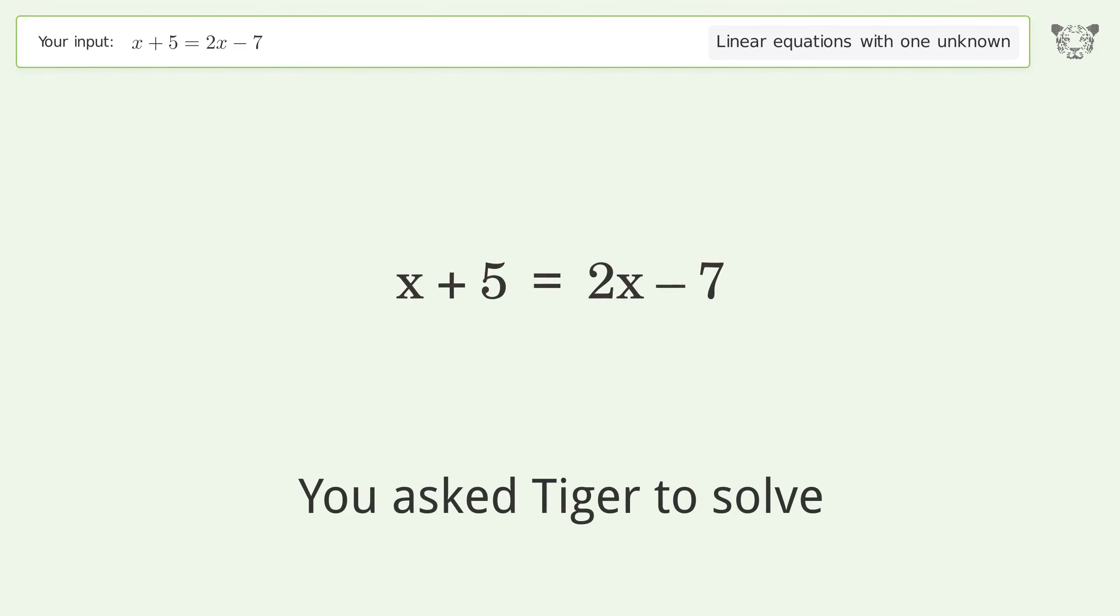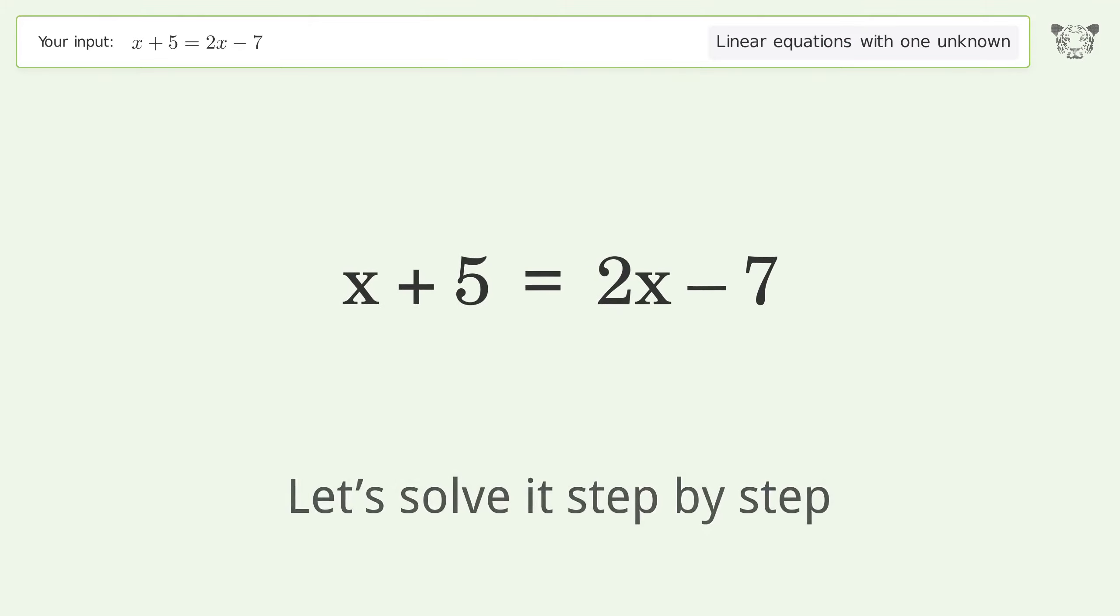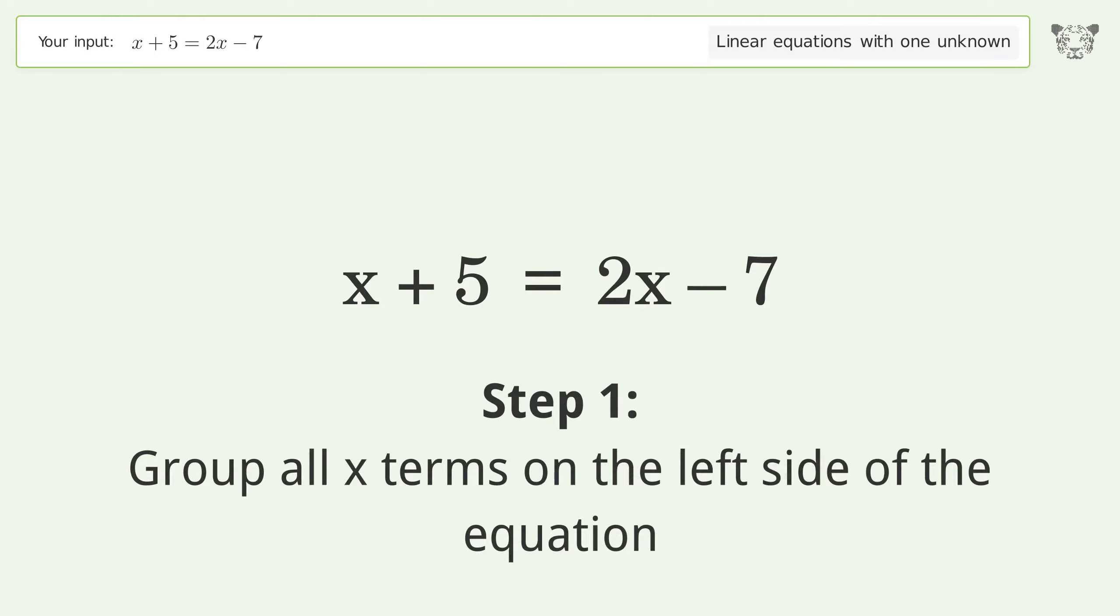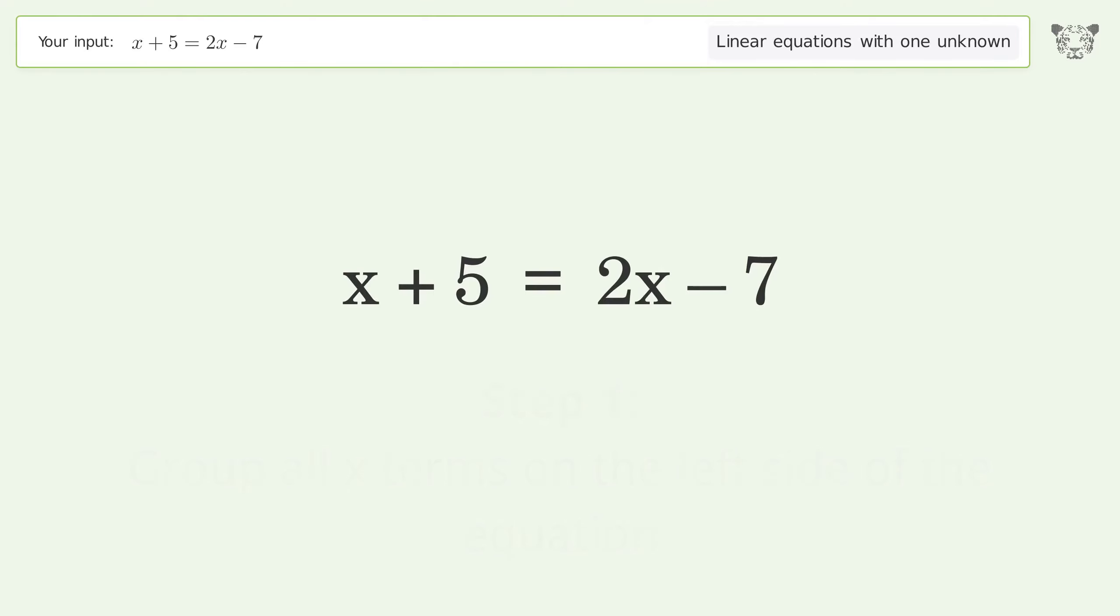You ask Tiger to solve this, dealing with linear equations with one unknown. The final result is x equals 12. Let's solve it step by step. Group all x terms on the left side of the equation. Subtract 2x from both sides.